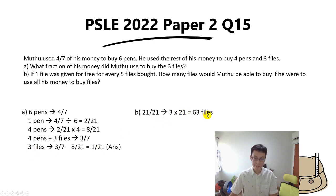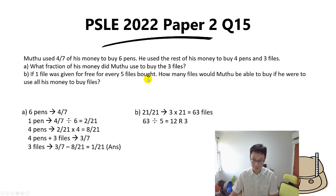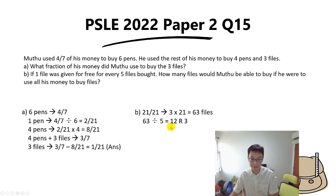Remember, one file is given free for every five files bought. So take 63 divided by 5, which gives 12 remainder 3. The 12 represents the number of free files. Therefore, the total files will be 63 plus 12, and the answer is 75 files.